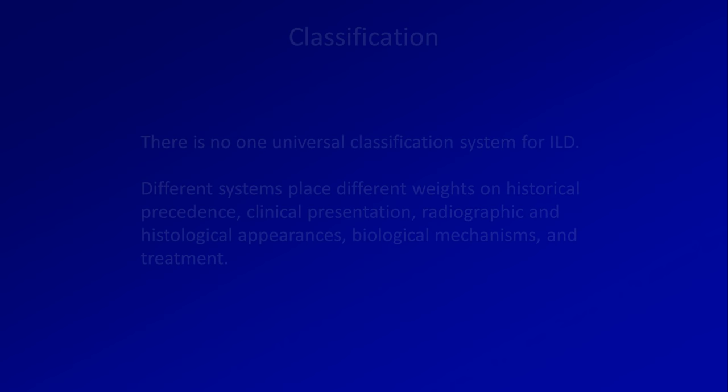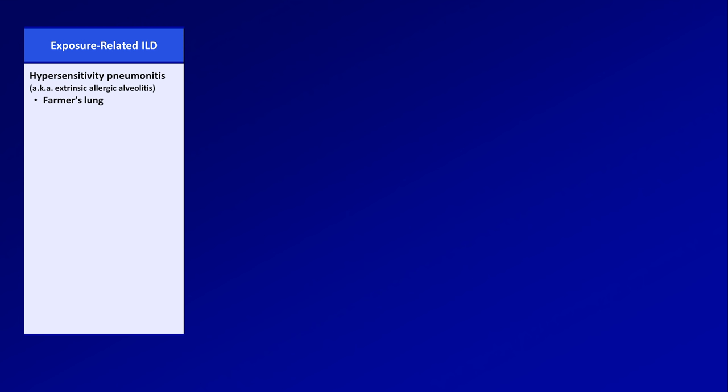I think about there being four main categories of disease. The first are those directly caused by exposures of some kind. In this category is hypersensitivity pneumonitis, also known as extrinsic allergic alveolitis. This condition is caused by an immune-mediated response to inhaled organic dust. There are many subtypes based upon the inhaled substance, generally named not after the associated microbe, but rather the occupation or hobby of those who tend to get it — for example, farmer's lung caused by proximity to moldy hay, and bird fancier's lung caused by proximity to bird feathers or excrement.